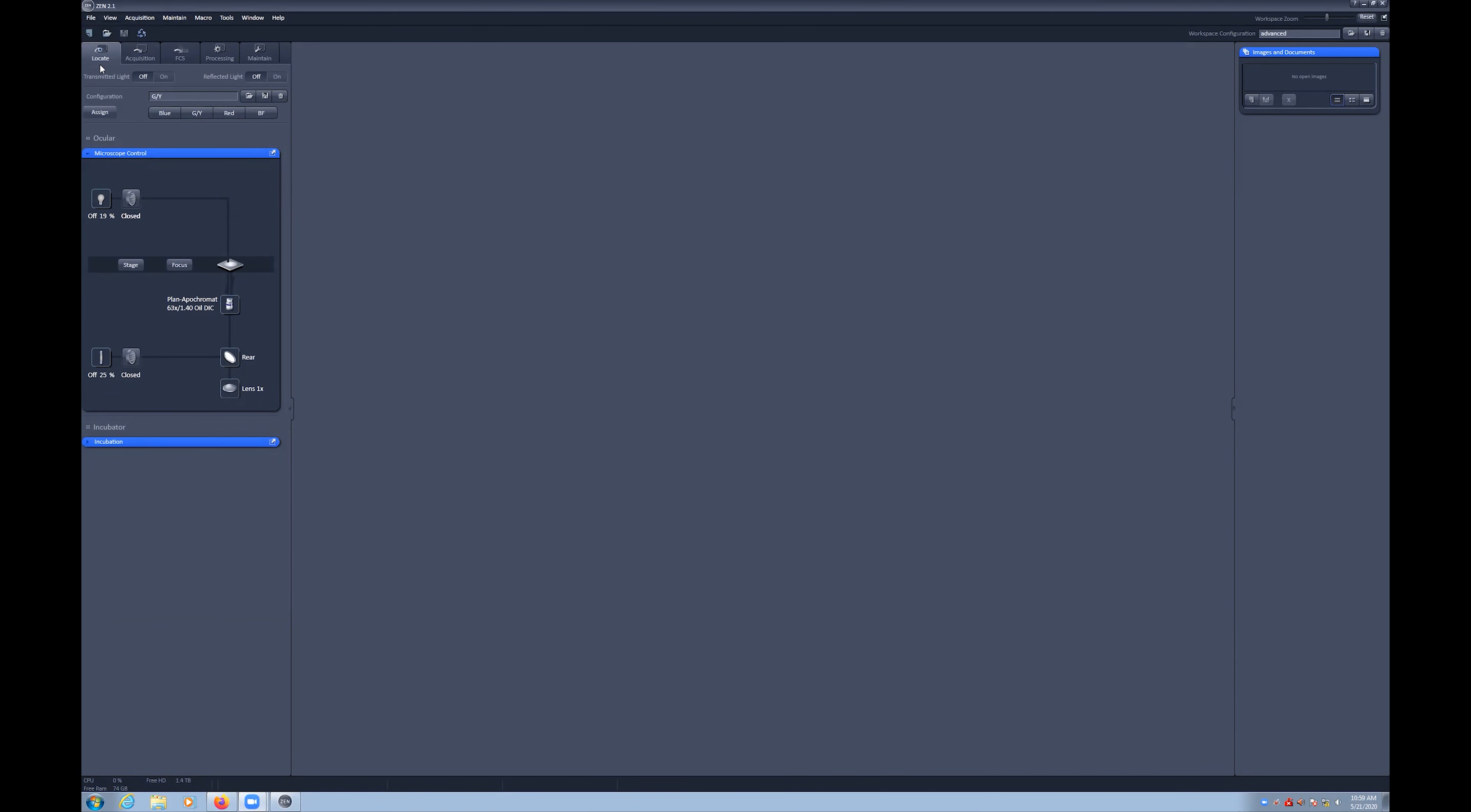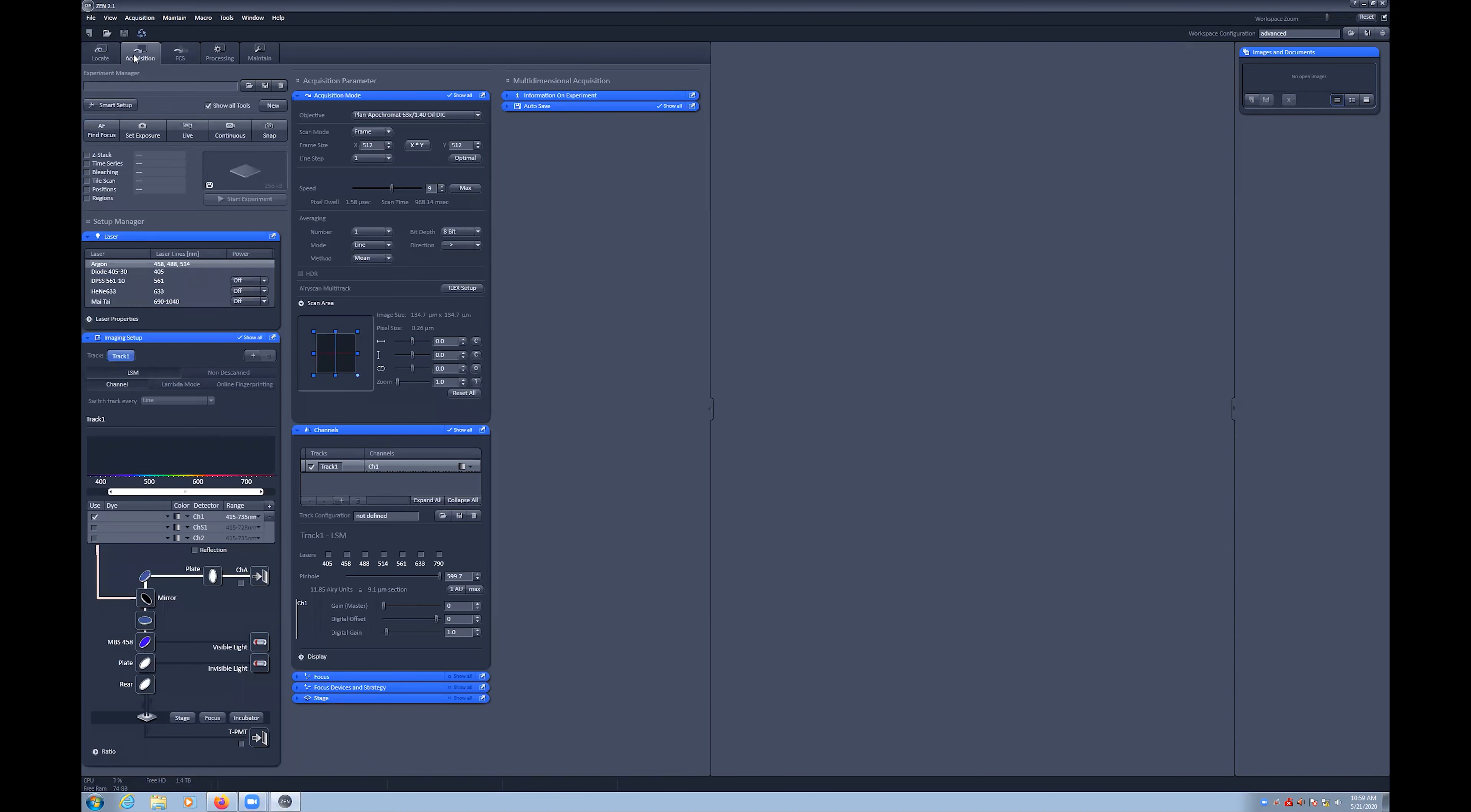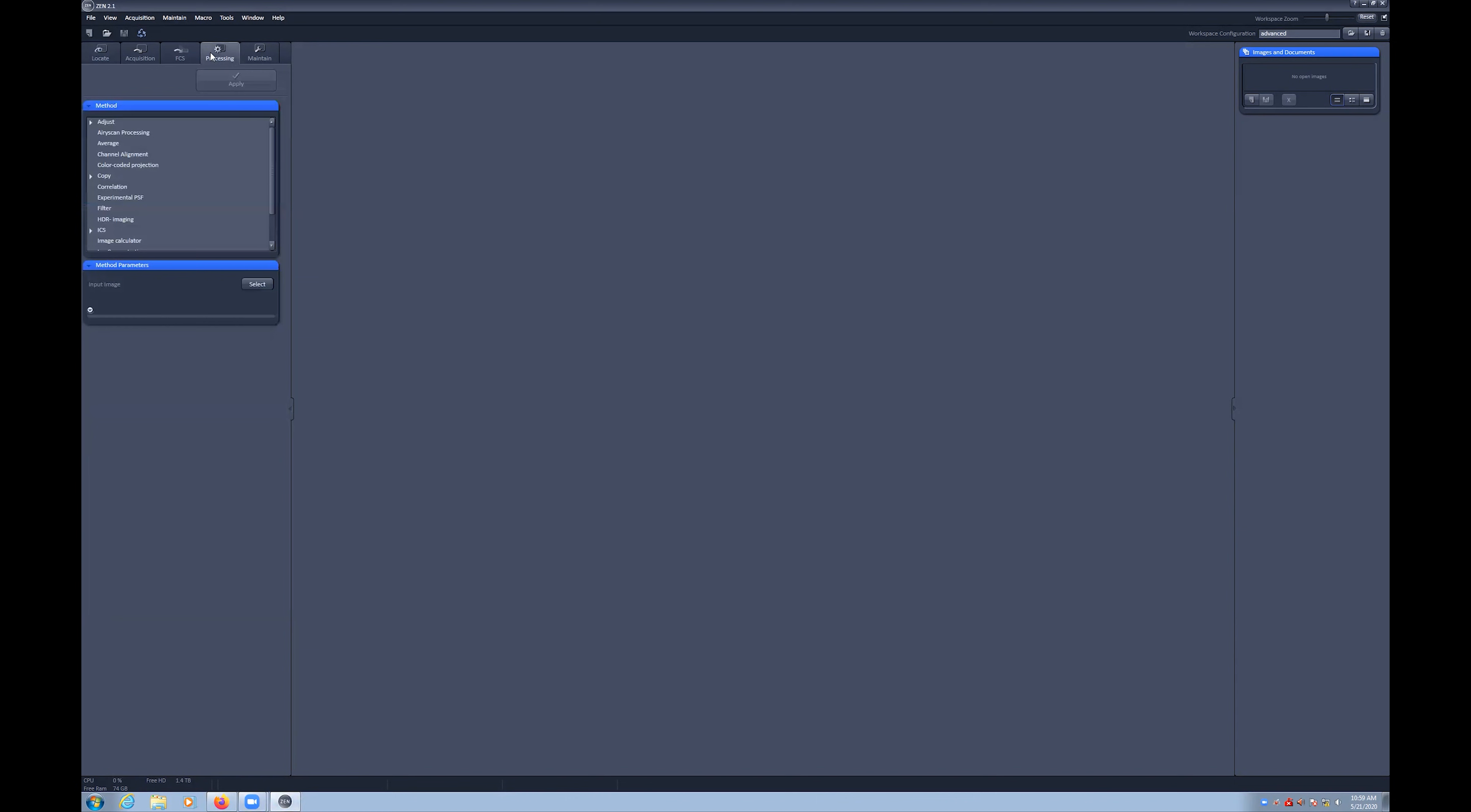The locate tab is used for finding your sample via the eyepieces using the fluorescent light source. The acquisition tab is used to configure your confocal imaging experiment. The processing tab is useful for a few processing steps. However, most of these can be preferably completed offline on one of the virtual analysis computers, instead of taking up time on the acquisition device. Use of the maintain tab is only required for advanced users and is not covered in this series.